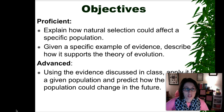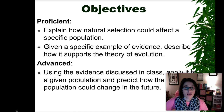Here are your objectives. In order to be proficient, in order to score a level 3, you need to explain how natural selection affects a specific population. And then if I give you a specific example of evidence of evolution, you need to describe how that actually supports the theory.